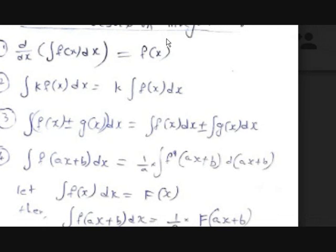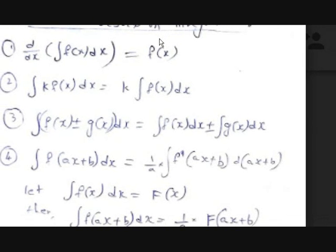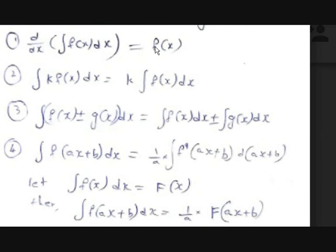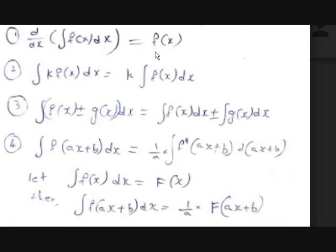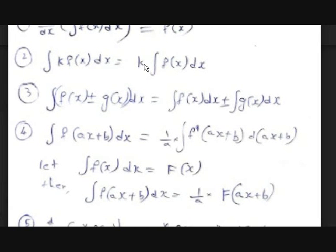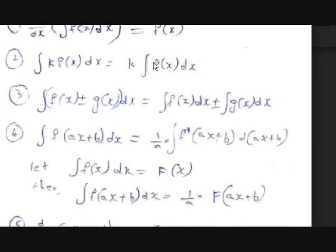First, d/dx of the integral of f dx is nothing but f — meaning if we differentiate an integral you get the same function. And if we integrate a constant multiplied with a function, meaning the integral of k·f, you get the constant times the integral of that function: k · ∫f dx.